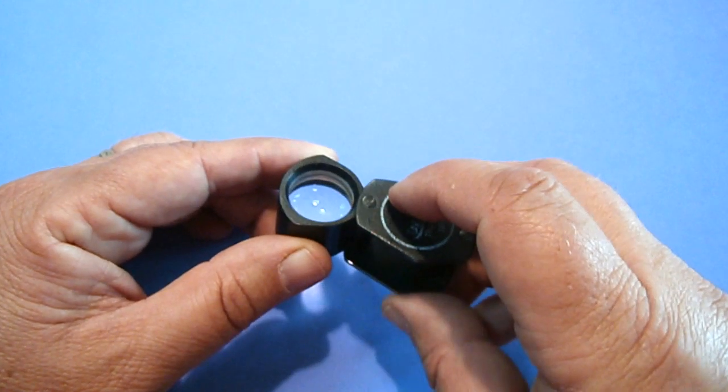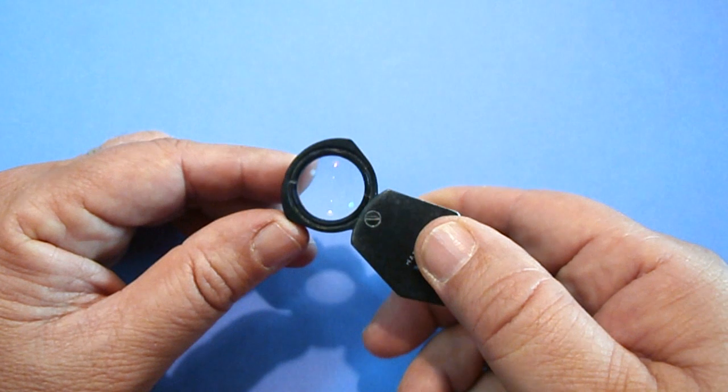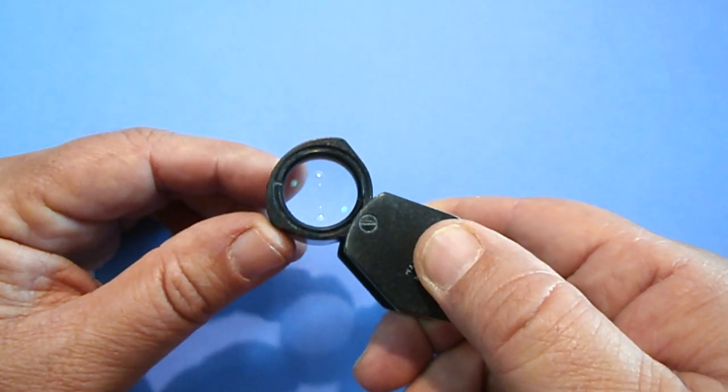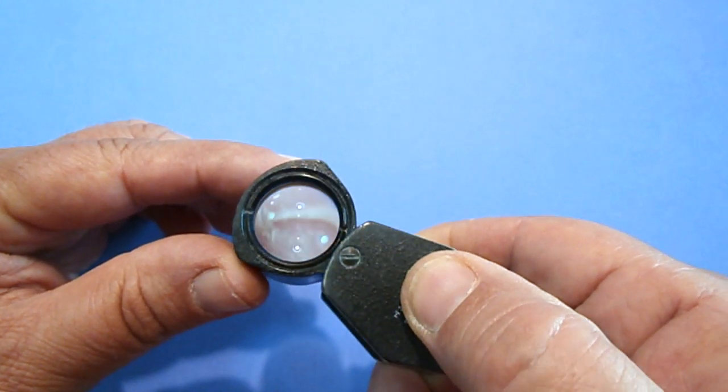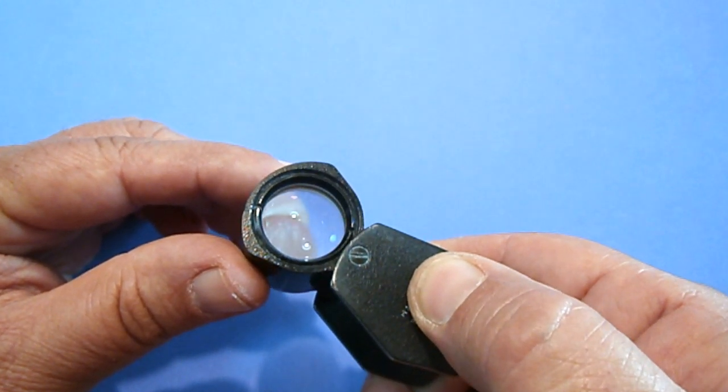And not only do you get a much sharper and crisper view of the image compared to a doublet, which has two lenses, or the more commonly cheap singlets, but you also get a better view of the colour. You get a more natural view of the colour, which you don't get with certainly the cheaper loops or with the doublets.